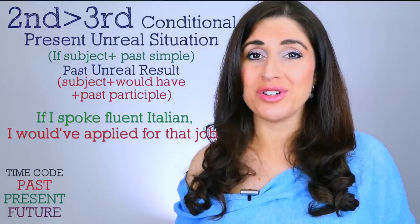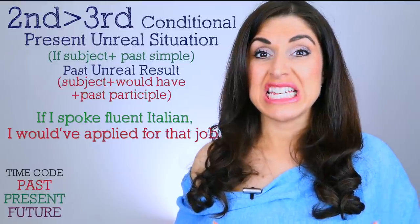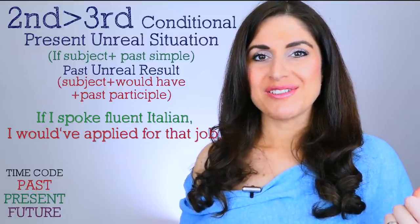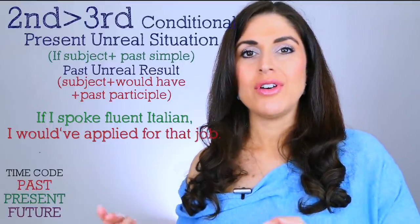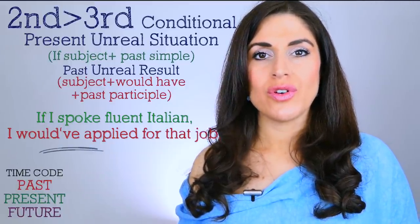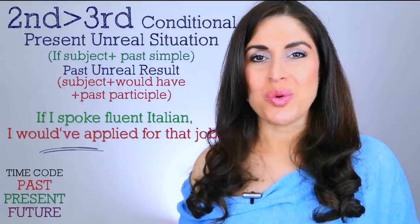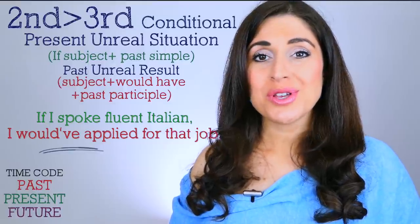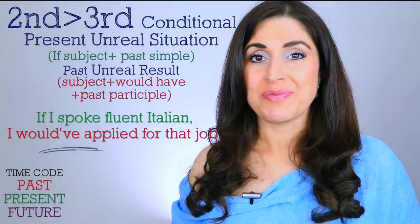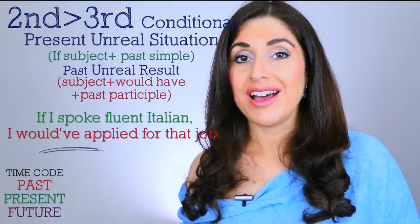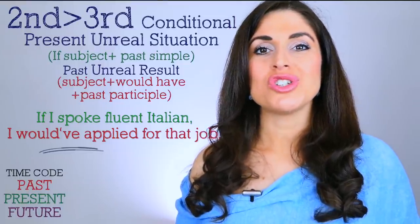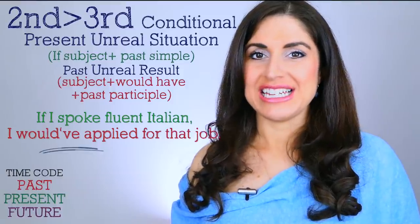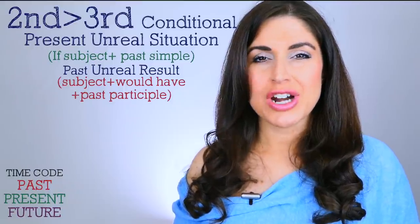My Italian is pretty poor, but I'm thinking if I could speak Italian right now, I would have applied for a job in the past. It's worth mentioning: 'would have applied' — try using that very natural contraction 'would've' when you speak. It is so important in English to contract pronouns with auxiliary verbs and modals. 'Would've applied,' 'would've gone,' 'would've done,' 'would've had.' And it is NOT 'would of' — though it can sound like that when pronounced quickly. It's a grammar mistake many native English speakers make.